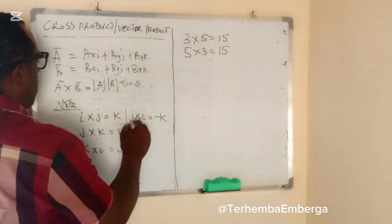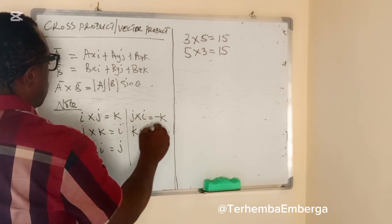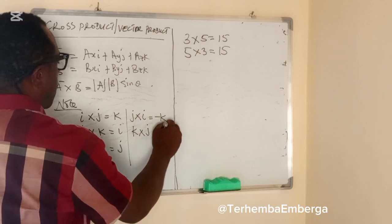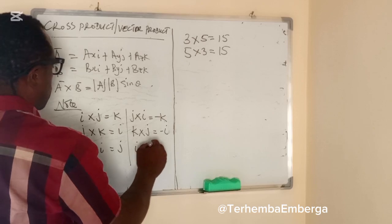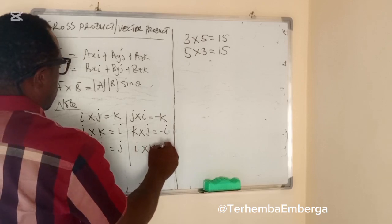And if you say K cross J, it will give you minus I. And if you say I cross K, it will give you minus J.